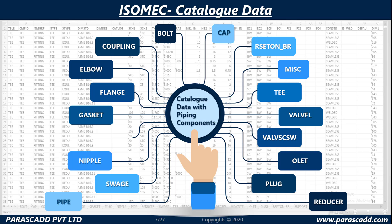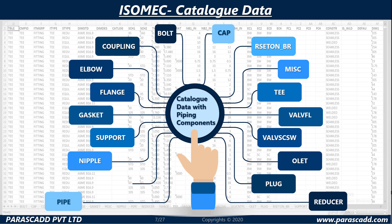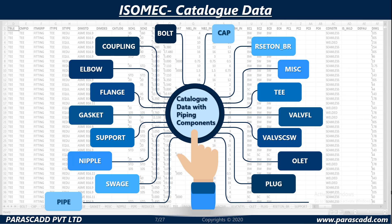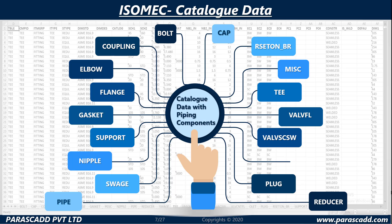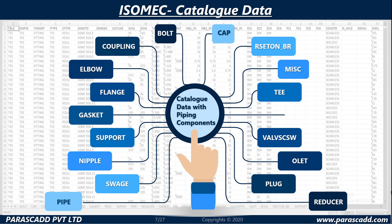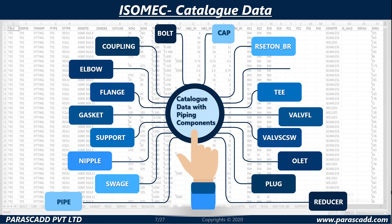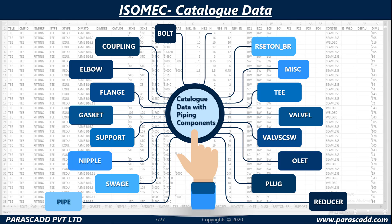Isomec catalogue data covers a wide range of components including bolt, coupling, elbow, flange, gasket, support nipple, pipe, reducer, plug, valve, socket weld, and cap.